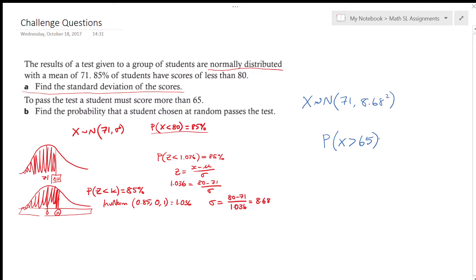So we're going to use normal CDF on our calculator. We're going to have a lower bound of 65, an upper bound of just a really big number.